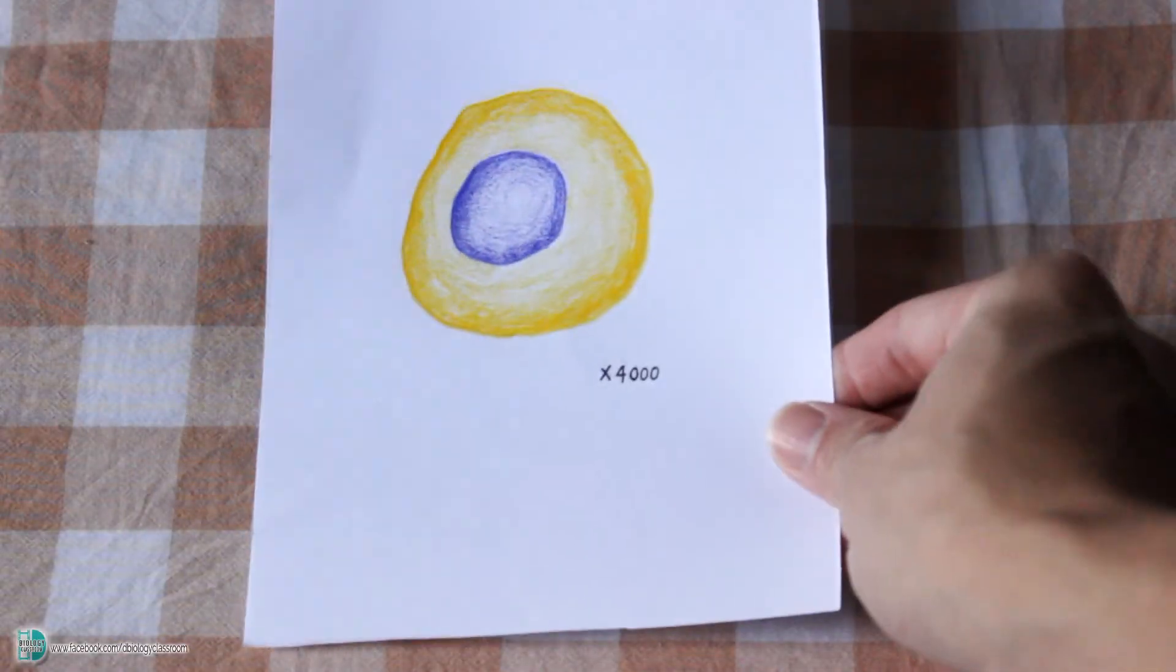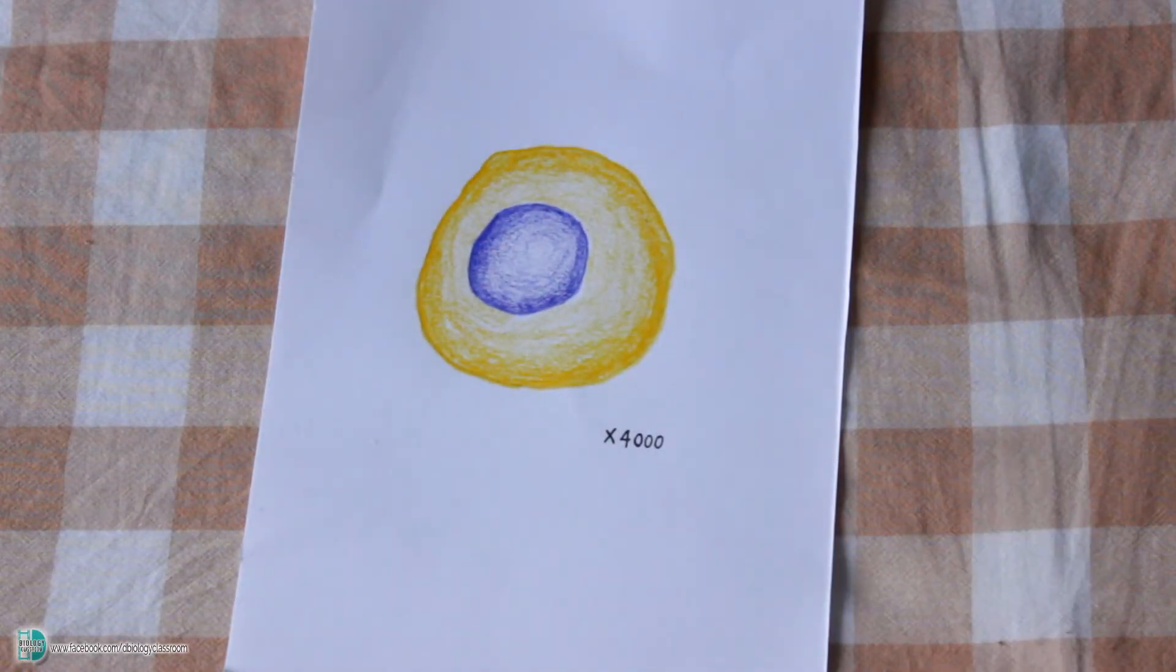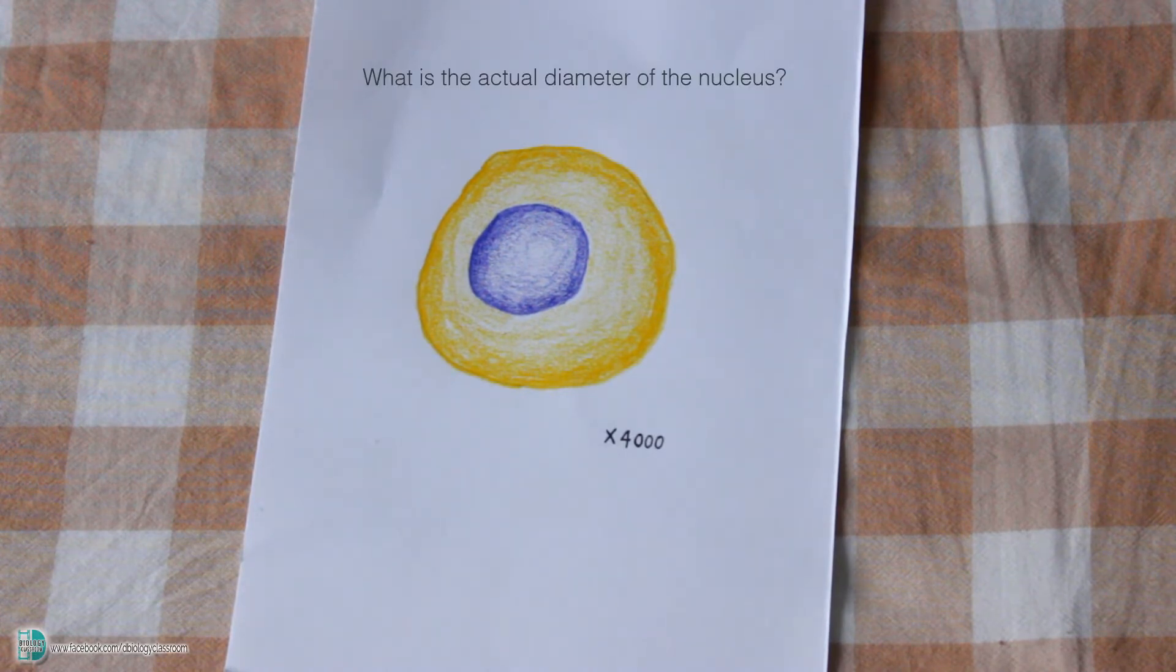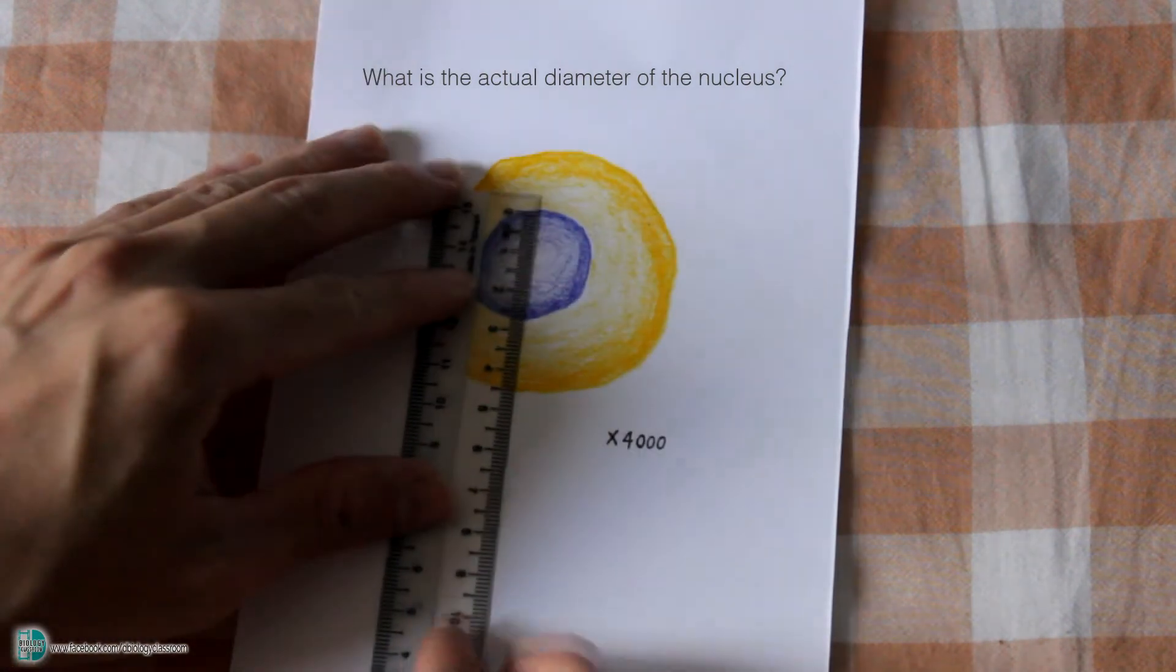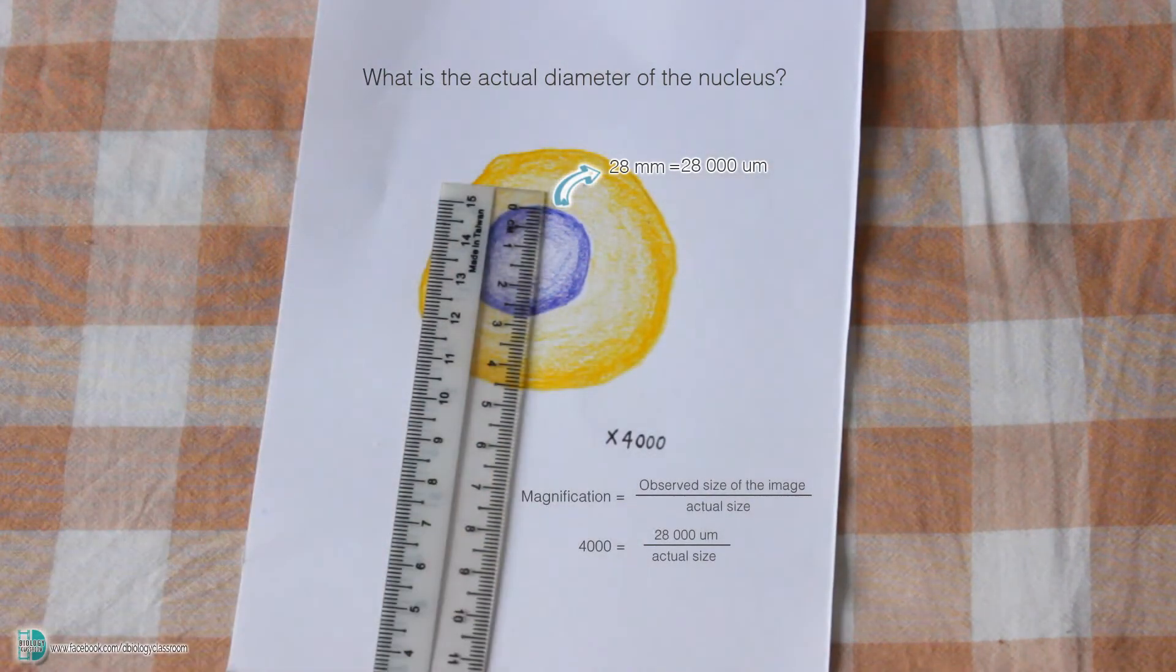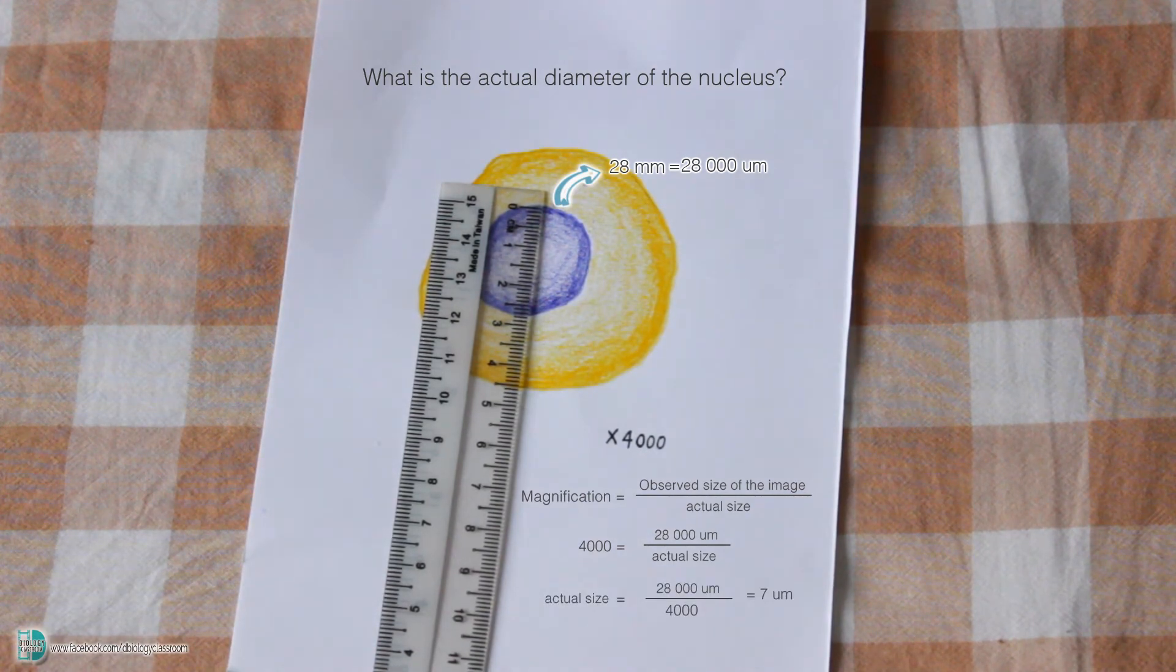In the third example, you are given a diagram of the cell. The magnification of the diagram is stated in the picture. You are required to calculate the actual size of the nucleus. What you have to do is measure the image size of the nucleus. Then, put the values into the formula. Rearrange the formula, and then you will be able to get the actual size of the nucleus.